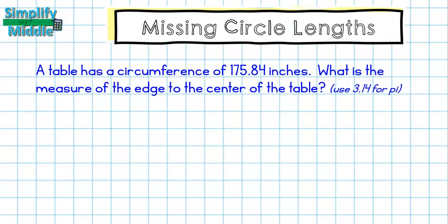Let's look at some word problems. In this one, a table has a circumference of 175.84 inches. What is the measure of the edge to the center of the table? Use 3.14 for pi. Well, I know if I'm looking at edge to the center that that's asking me for the radius. So I have a circumference with a missing radius.